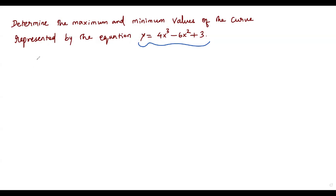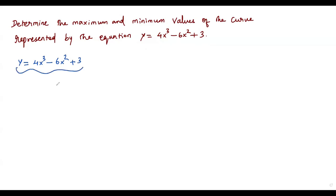First, let me write the given function as it is: y equals 4x cubed minus 6x squared plus 3. Now, we need to find the first derivative of this function with respect to x, because y is a function of x.